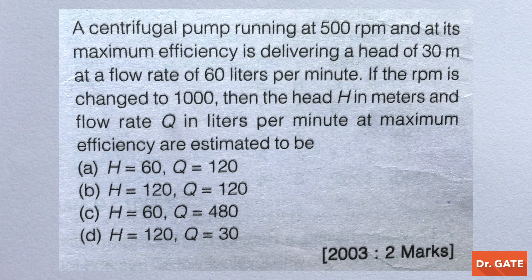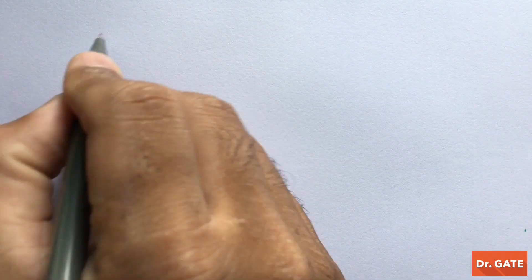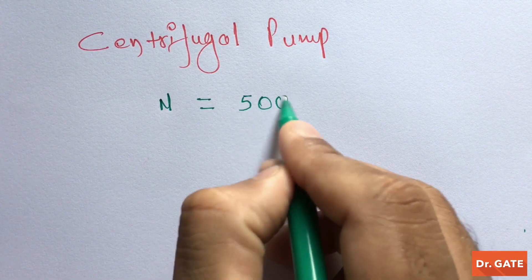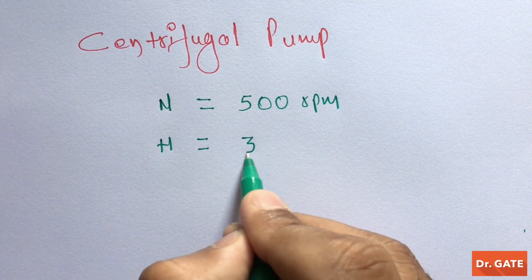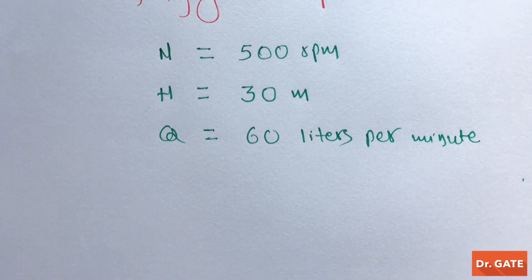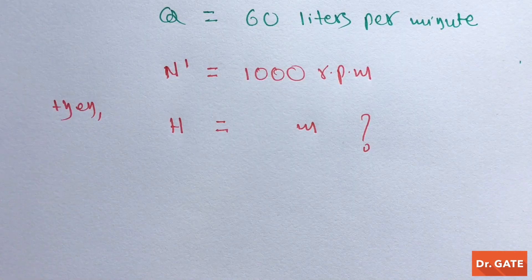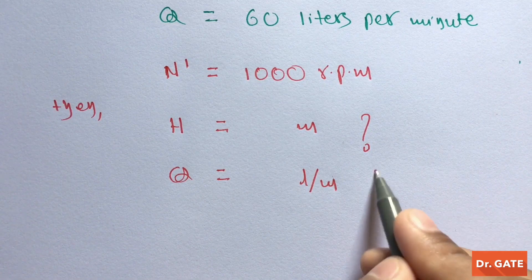First Numerical: A centrifugal pump is running at 500 RPM. At its maximum efficiency it is delivering a head of 30 meters at a flow rate of 60 liters per minute. If the RPM is changed to 1000, then the head in meters and discharge in liters per minute at maximum efficiency are to be found.